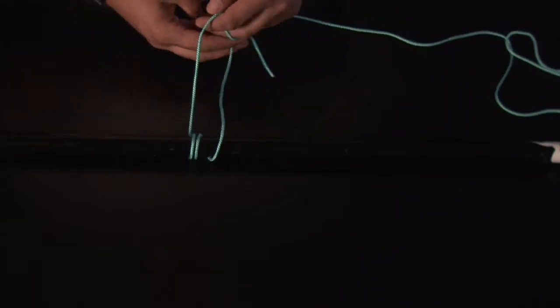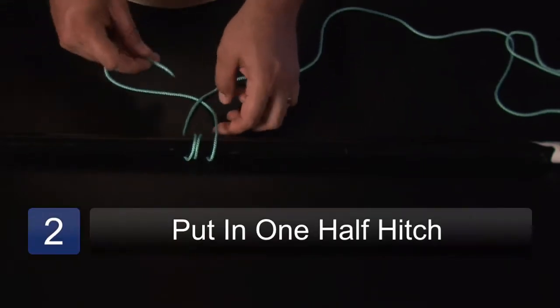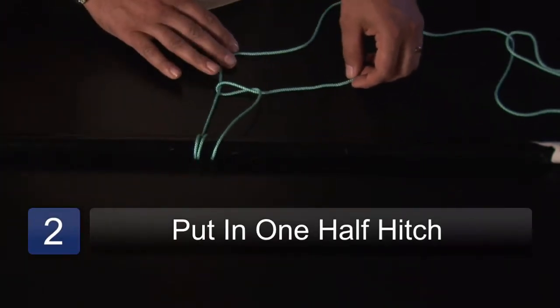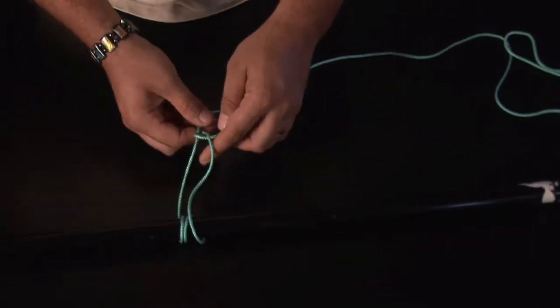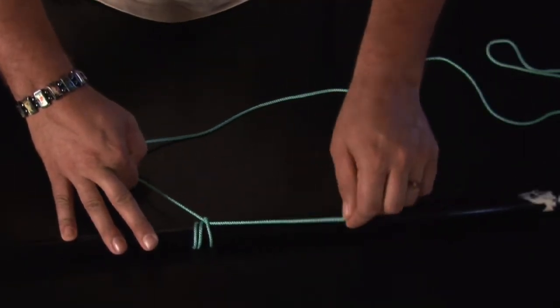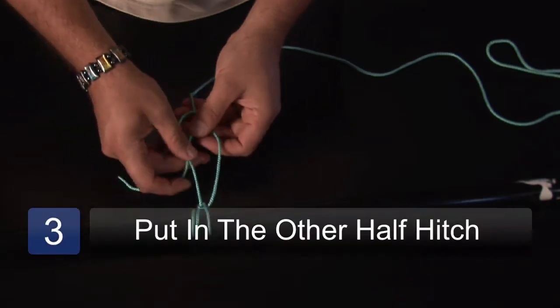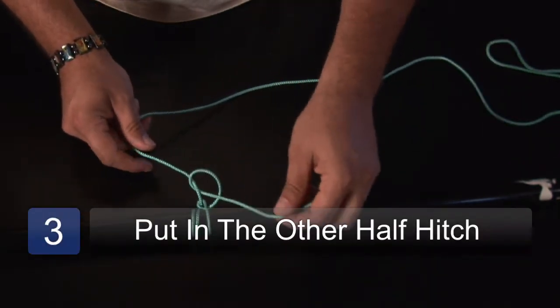And then we're just going to put two half hitches in it like so. We're just going to wrap it under and through. Let's put this up so we can see this. So that's one half hitch, and then to lock it into place we're going to use the other half hitch like so.